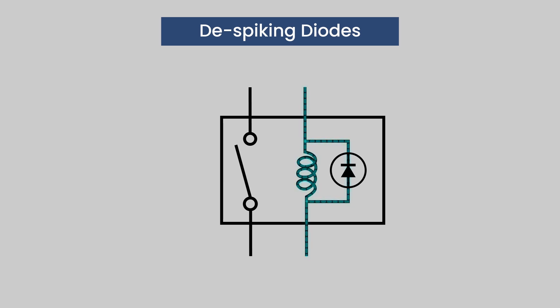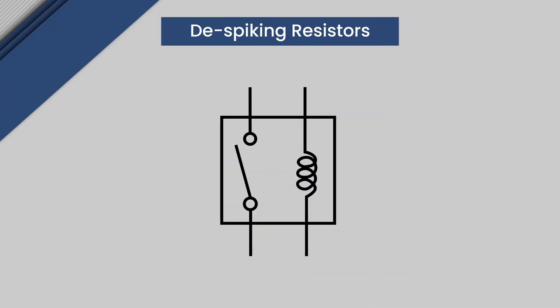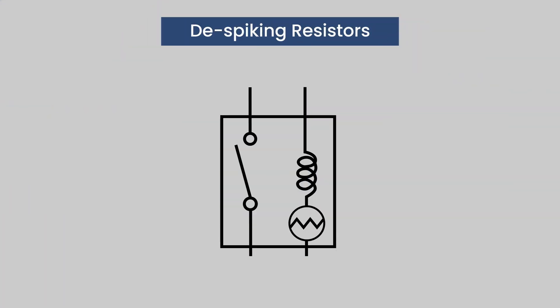Relays with despiking resistors: these are the alternative option to diodes. They are more durable than diodes and allow current to flow through while the relay is on, but the resistor must be rated for about 600 ohms for it to be effective.